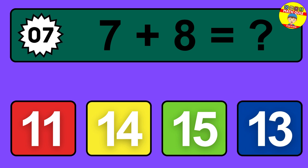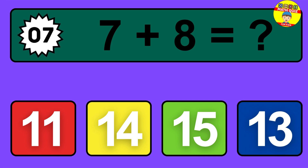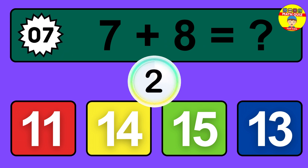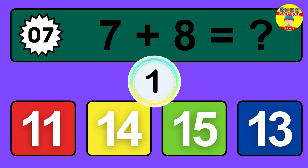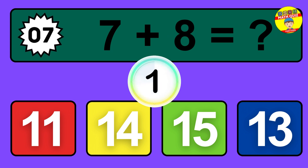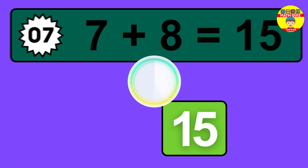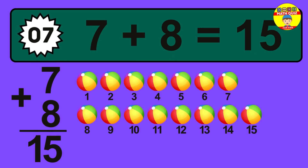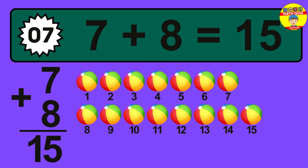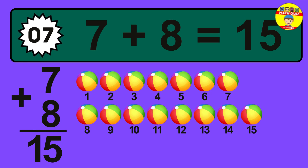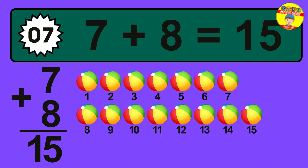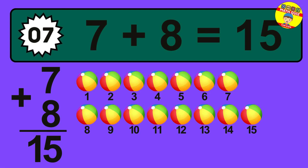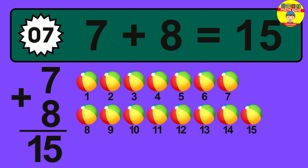Question 7. 7 plus 8 equals what? The answer is 7 plus 8 is 15. Let's count it: 1, 2, 3, 4, 5, 6, 7, 8.